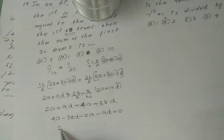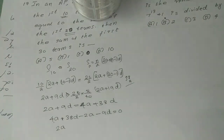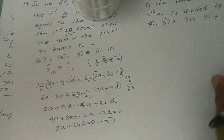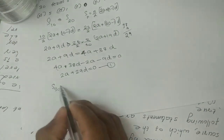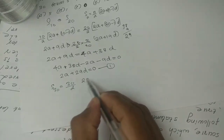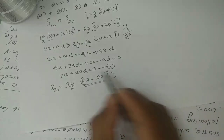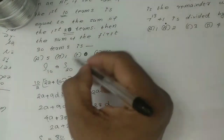Working through the algebra: 4a + 2(2a + 29d) = 0. Now for S30, we use S30 = 30/2 into (2a + 29d). Since we established that 2a + 29d equals 0, S30 = 30/2 into 0 = 0. So the answer is option C.